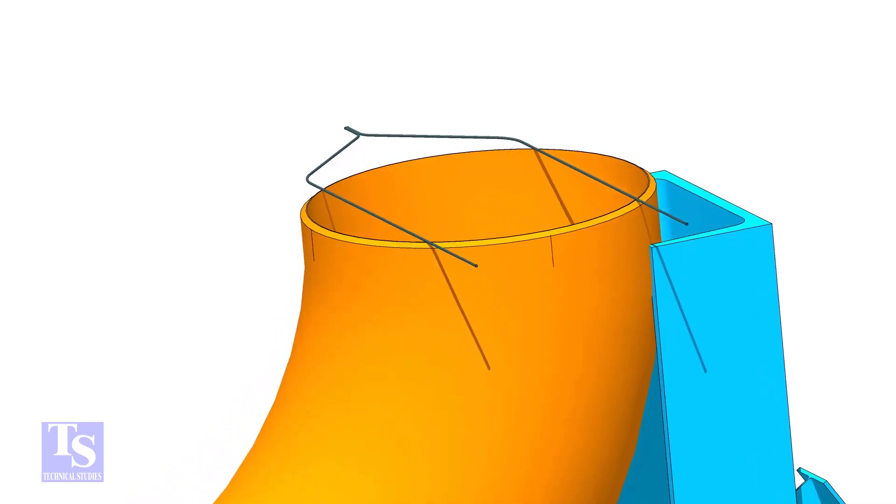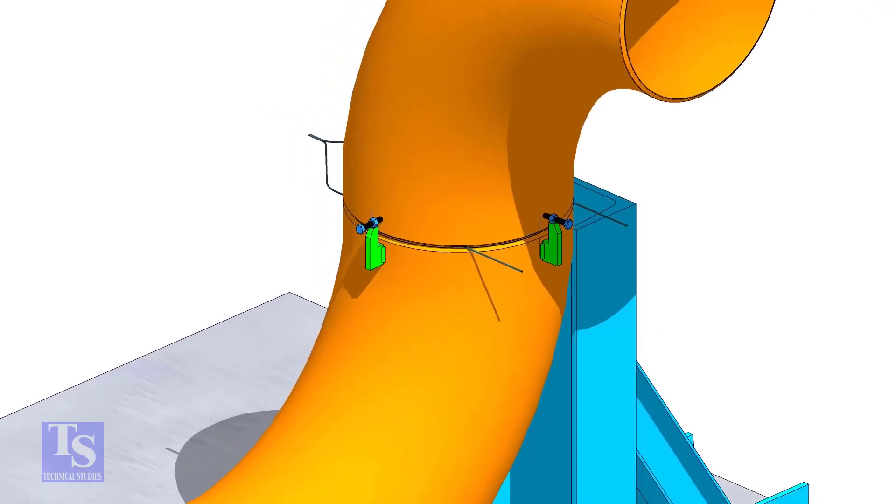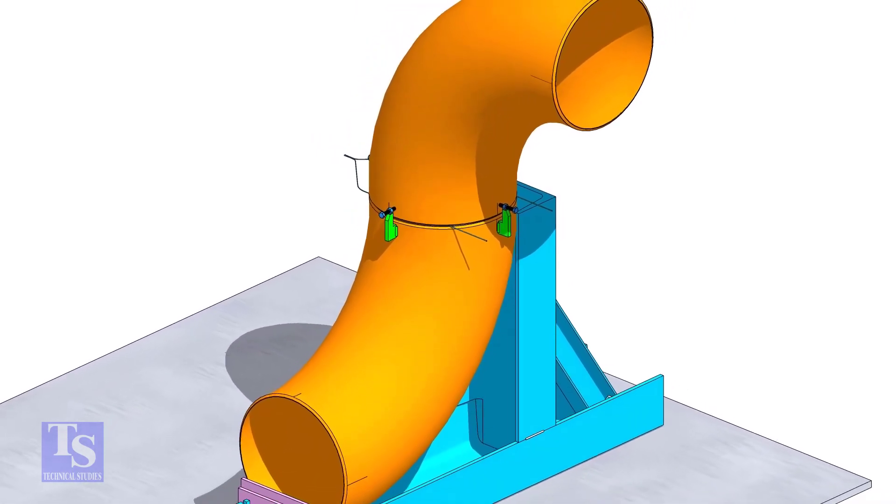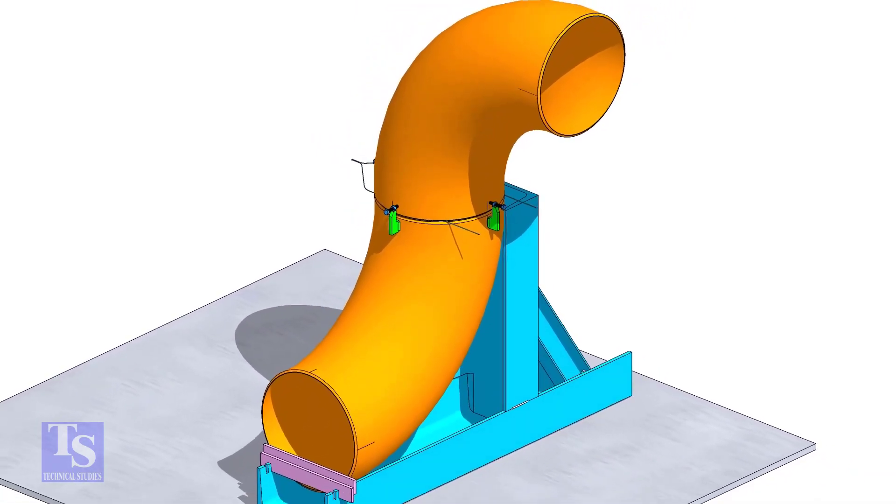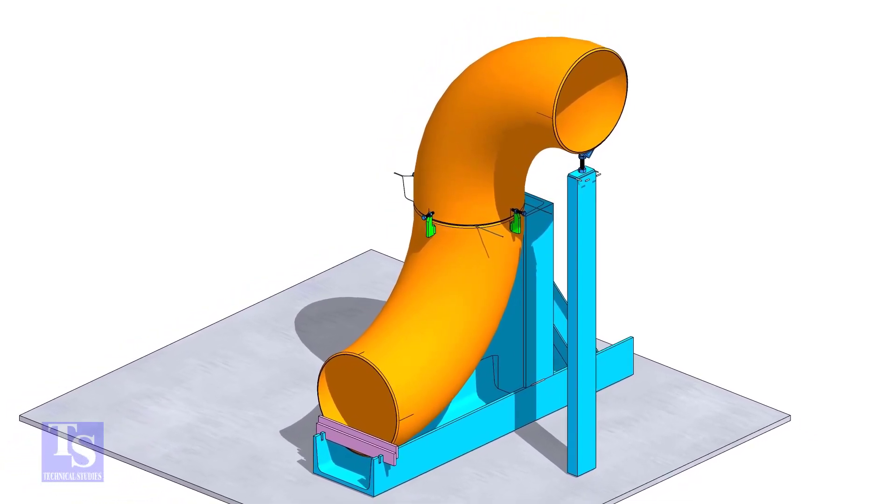Put the gap rod on the top face and tack weld four numbers jack bolts as shown. Put the other elbow and match the center lines in which direction you want to rotate the elbow. Tack weld an adjustable support below this elbow and adjust the height.